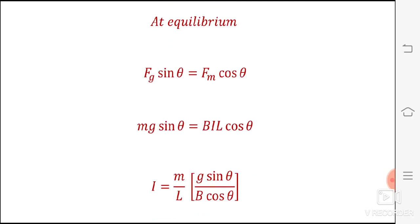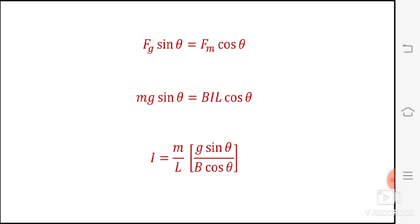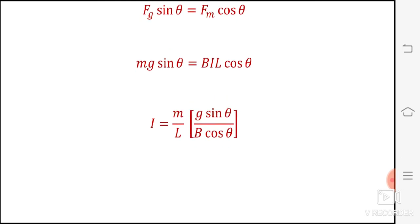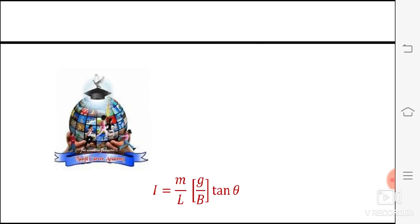From this equation, we can calculate I is equal to m by L into g sin theta divided by b cos theta, where m by L is the mass per unit length, g is the acceleration due to gravity, b is magnetic field, theta is angle of inclination. Sin theta by cos theta can be written as tan theta. So I is equal to m by L into g by b tan theta.